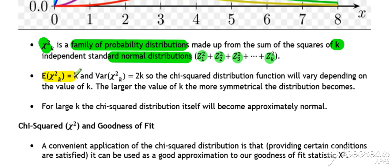It has an expected value of k and a variance of 2k. These are just details you don't really need to use the expected value and the variance very often for a chi-squared distribution, but it's just to complete its definition.